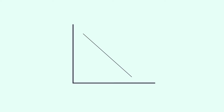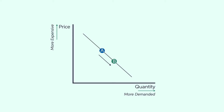Graphically, elasticity can be seen as a line shown here with price levels as the y-axis and quantity demanded as the x-axis. For a typical good, as price decreases, the quantity demanded increases, as seen with the movement from A to B. Many goods and services fall into this category.